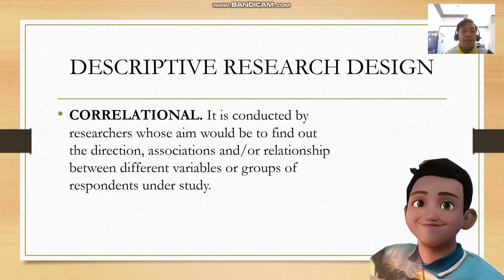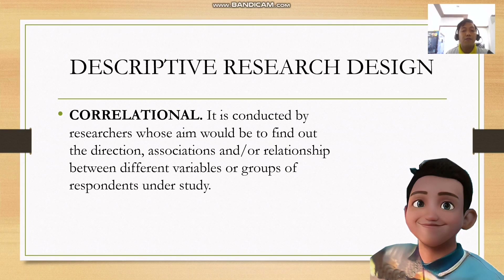Next is the correlational design. It is conducted by researchers whose aim is to find out the direction, association, or relationship between different variables or groups of respondents under study. If you want to know the relationship between two variables, you can use this research design.